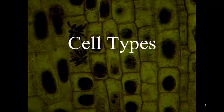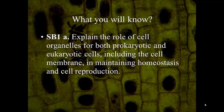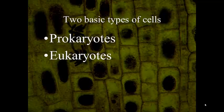Now that you've learned about cell history and the scientists, we will talk about the specific types of cells that exist. The standard explains the role of cell organelles for both prokaryotic and eukaryotic cells. We will learn about the cell membrane, maintaining homeostasis, and cell reproduction, but today we're going to focus on prokaryotic and eukaryotic cell types.